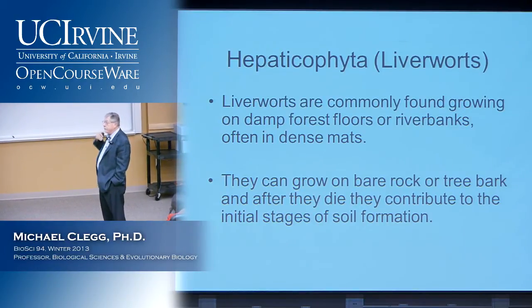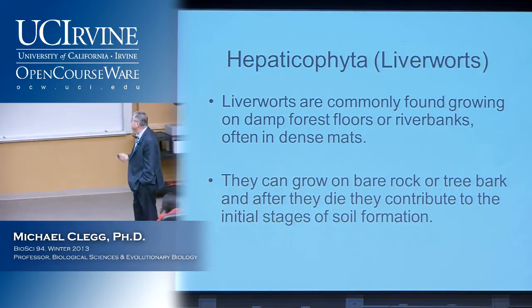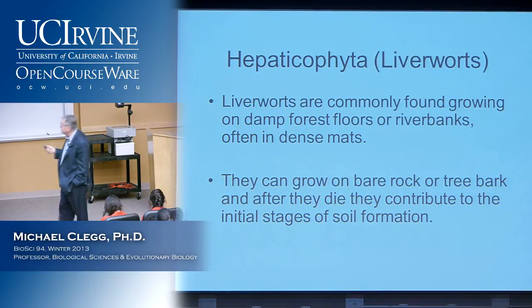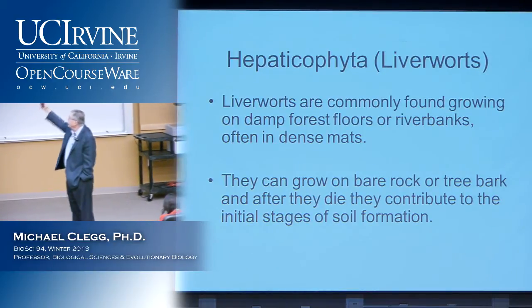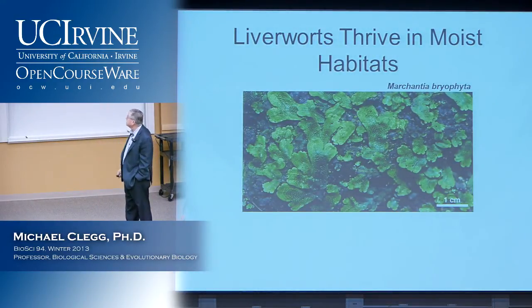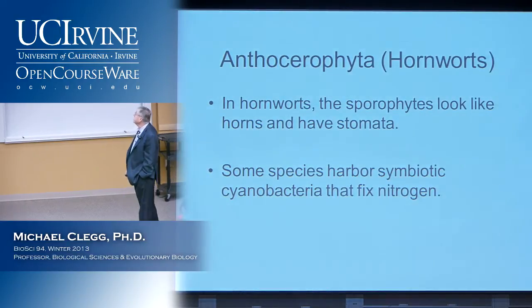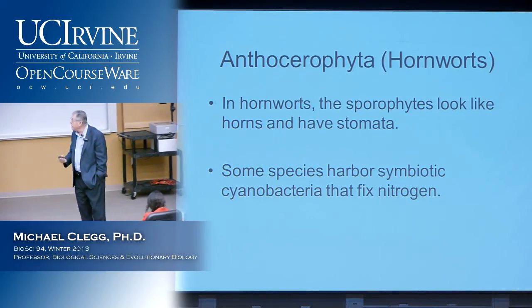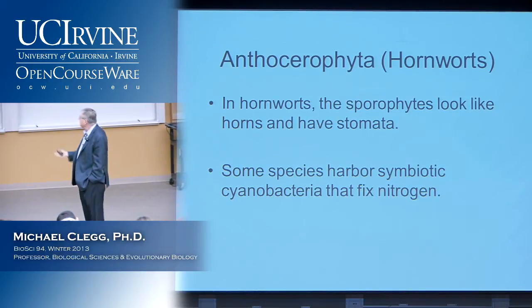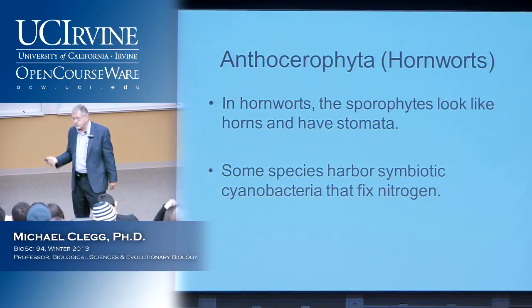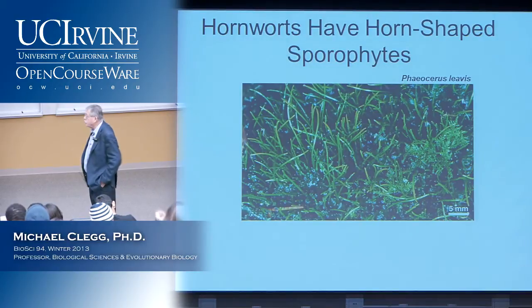Liverworts are common in damp forest floors, riverbanks, and so forth. They can grow on dry rock or bare rock and tree bark, and they contribute to the initial stages of soil formation. Then we have the hornworts — some species harbor symbiotic cyanobacteria, so they can fix nitrogen because of the symbiotic association with a cyanobacterium.